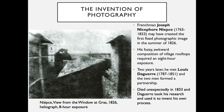The invention of photography. Frenchman Joseph Nicéphore Niépce may have created the first fixed photographic image in the summer of 1826 — though for our purposes the invention of photography is dated to 1839, when it was first patented. His fuzzy, awkward composition of village rooftops required an eight-hour exposure. Two years later, he met Louis Daguerre and the two men formed a partnership. Niépce died unexpectedly in 1833, and Daguerre took his research and used it to invent his own process.